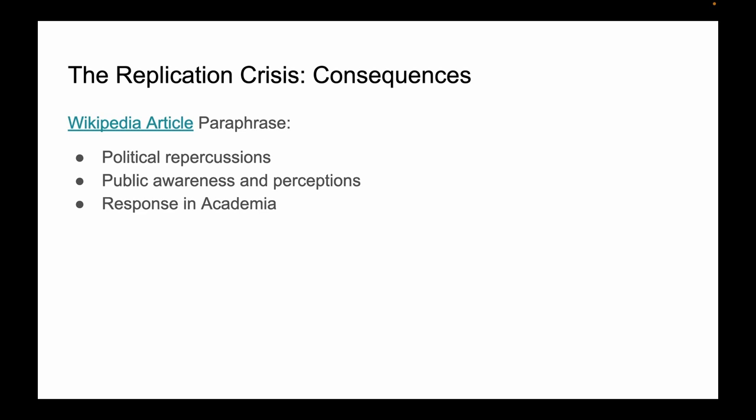The name-calling doesn't stop with the talking heads. The replication crisis gained the most attention in psychology. A professor from Princeton said anyone that calls out research that can't be replicated is a methodological terrorist, and that criticism should only be expressed in private.